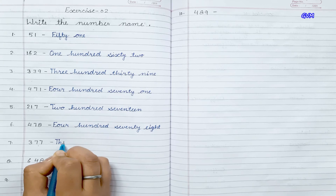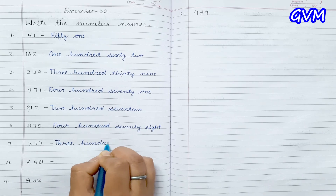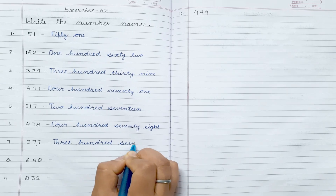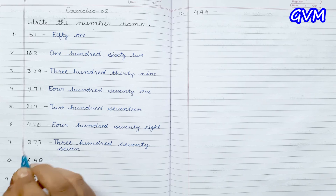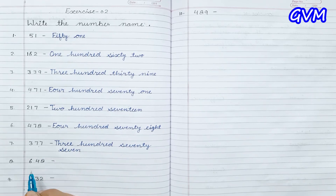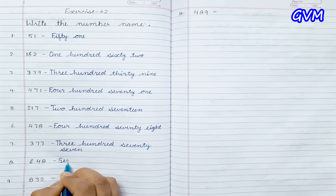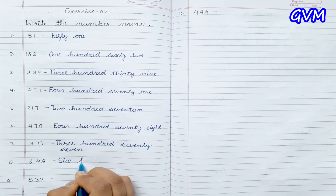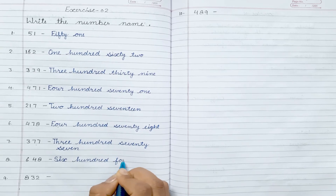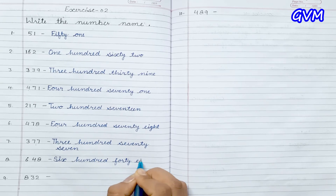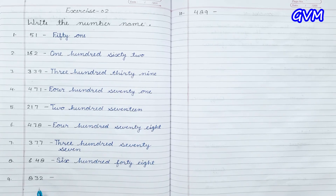Next is three hundred seventy-seven. T-H-R-E-E, three; H-U-N-D-R-E-D, hundred; S-E-V-E-N-T-Y, seventy; S-E-V-E-N, seven. Three hundred seventy-seven. Next number is six hundred forty-eight. S-I-X, six; H-U-N-D-R-E-D, hundred; F-O-R-T-Y, forty; E-I-G-H-T, eight. Six hundred forty-eight.